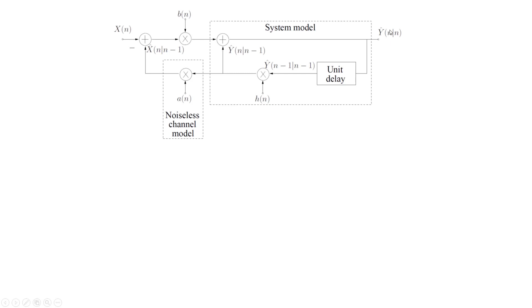Let's clarify this notation. The first time index denotes which sample the estimate corresponds to — so this estimate here corresponds to an estimate of Y at time n. The second time index denotes which is the last sample of X that was used to obtain the estimate. Therefore, Y-hat of n given n denotes the LMMC estimate of Y at time n, given the observation of all samples of X from time 1 up to time n.